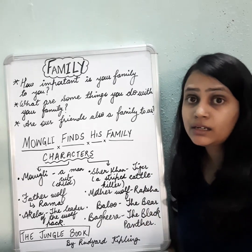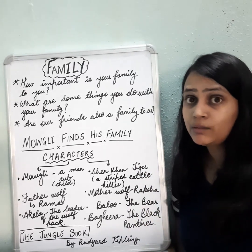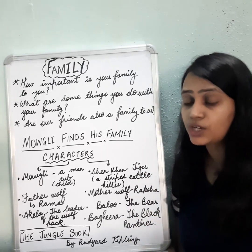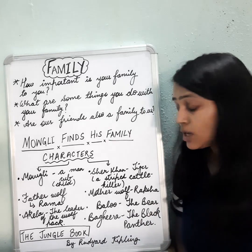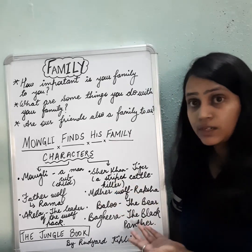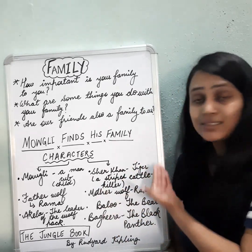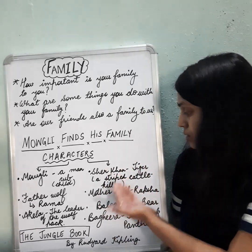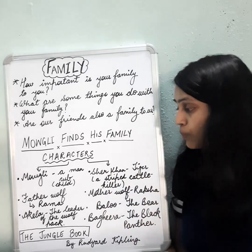He is called a striped cattle killer because a tiger has stripes on its body. And cattle killer — what do you mean by cattle? It means animals like cows, sheep, and buffaloes. That is the reason Sher Khan is referred to as the striped cattle killer.